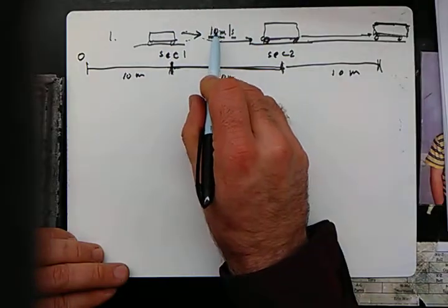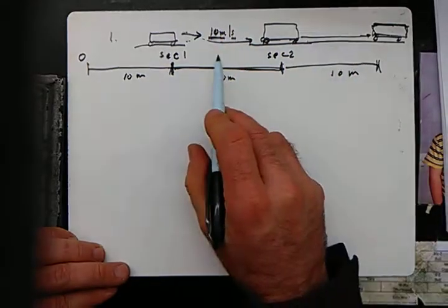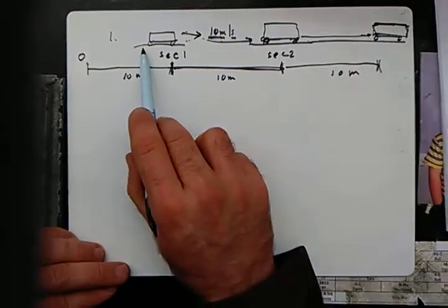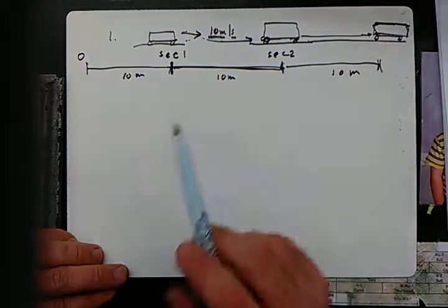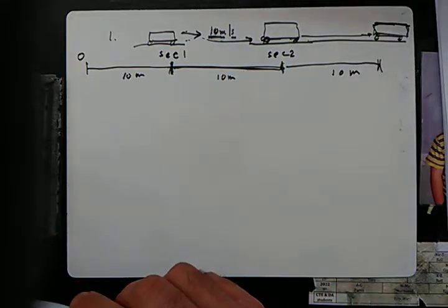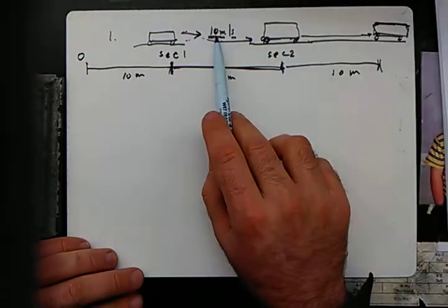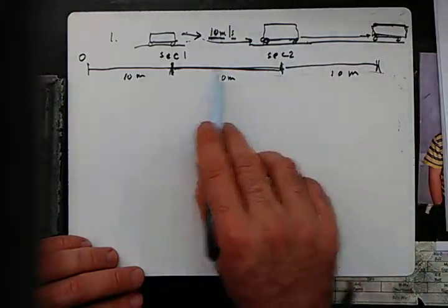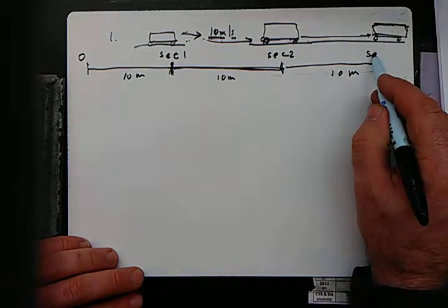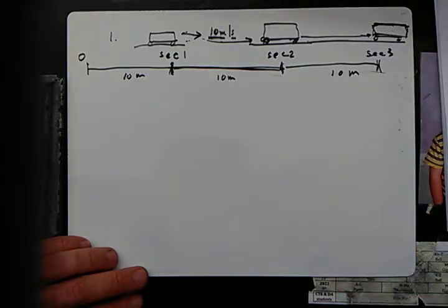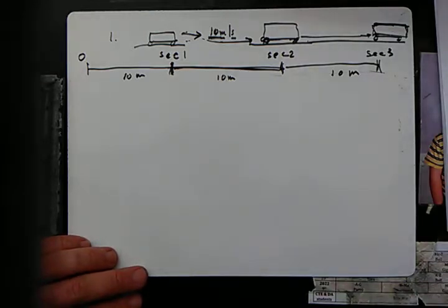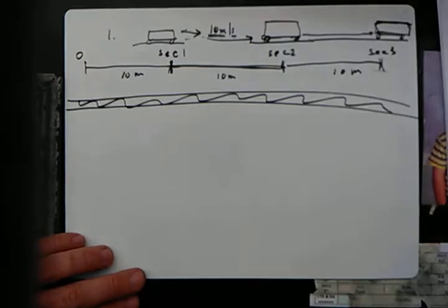We can continue that process as long as the car is going at a constant speed of 10 meters per second. So if I ask you from the picture: how many meters did it cover in one second? You'd say 10. How many meters in two seconds? You'd say 20. After three seconds it covers 30 meters. That gives you a visual representation of speed — which you've really understood throughout your lives, in the car, running, and so on.